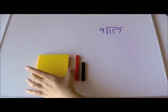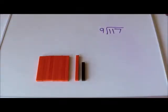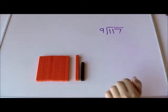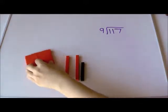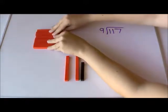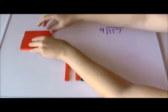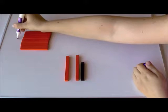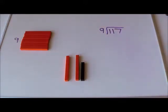The first thing I'm going to need to do is trade my 100 for 10 tens. So I still have 117. But now I can take 9 of those 10s and turn them like that so that I have 9 on that side.